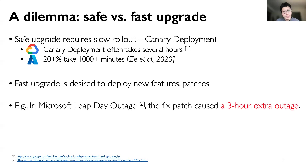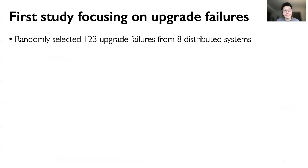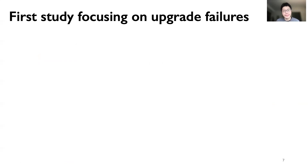To overcome this dilemma and help achieve safe and fast upgrades, in this work we performed the very first study focusing on upgrade failures in distributed systems. We randomly selected 123 upgrade failures from 8 widely deployed distributed systems. Our study mainly covers three aspects.